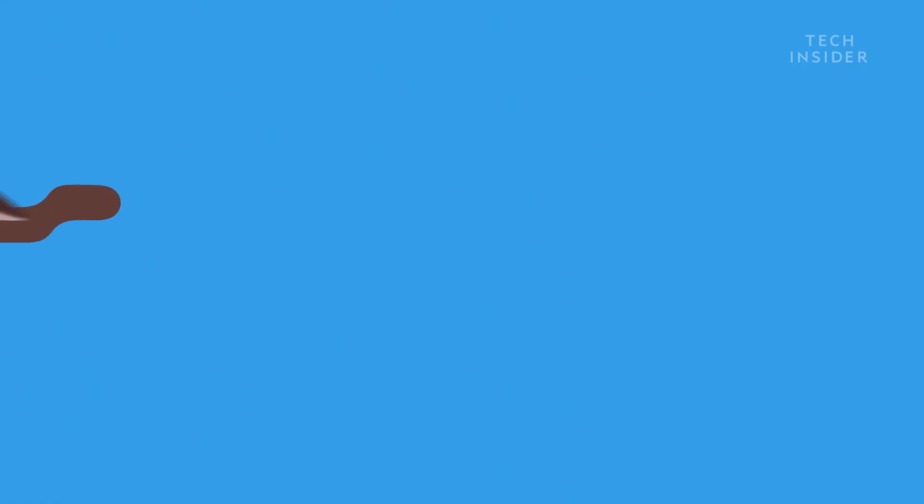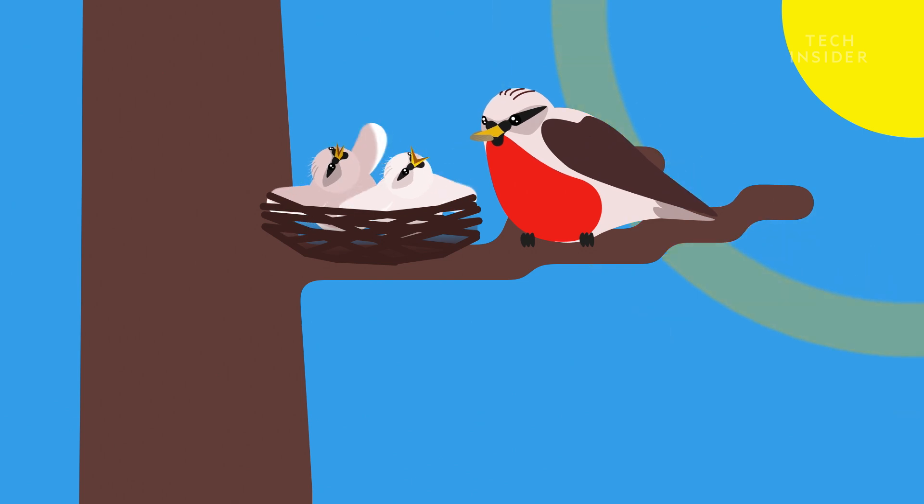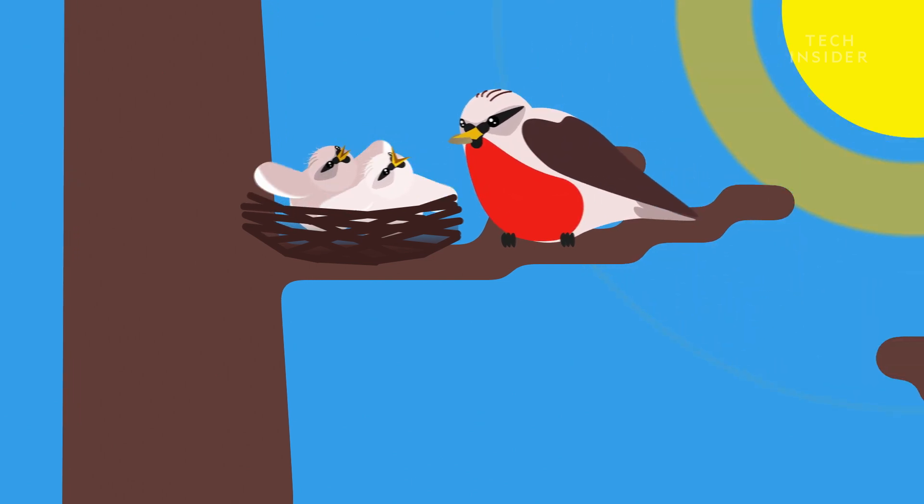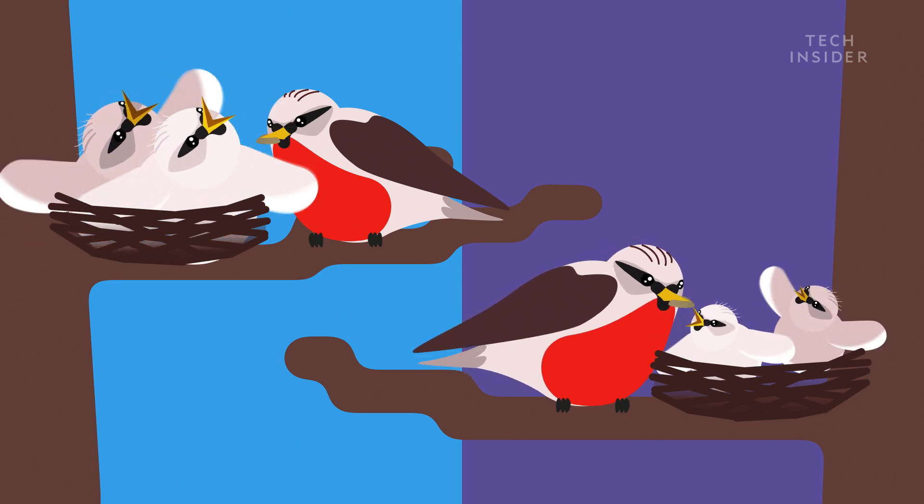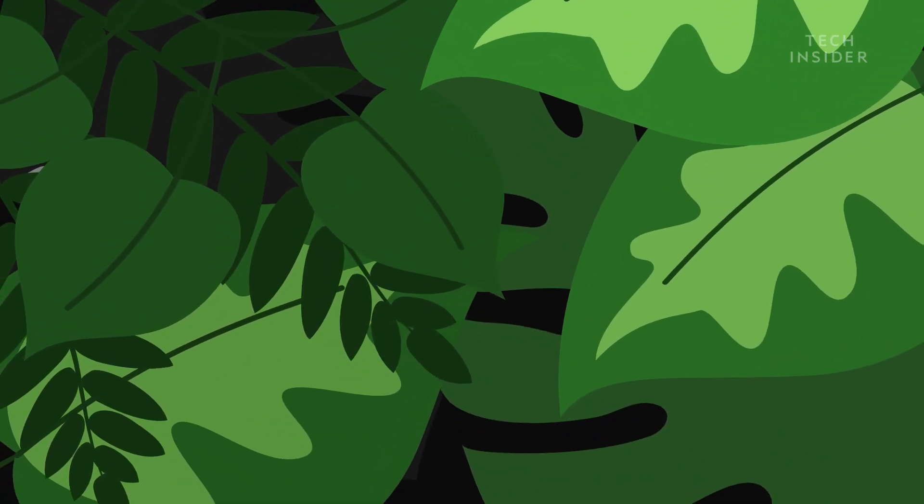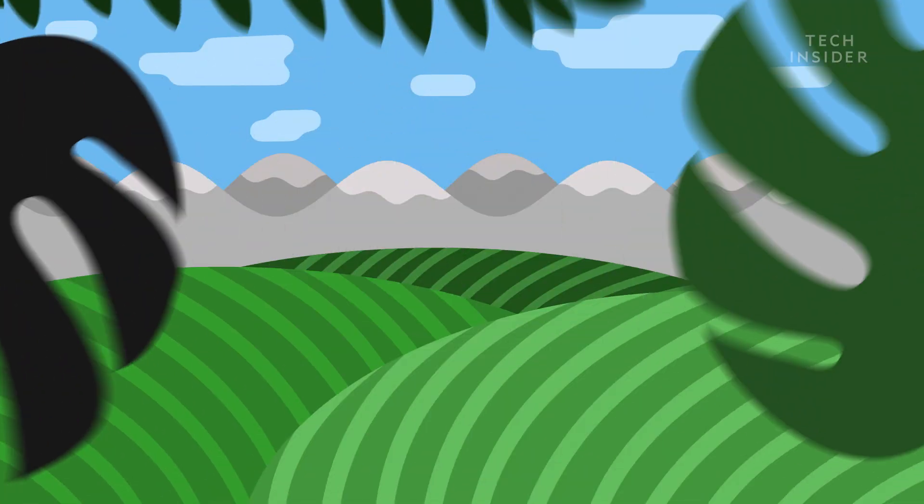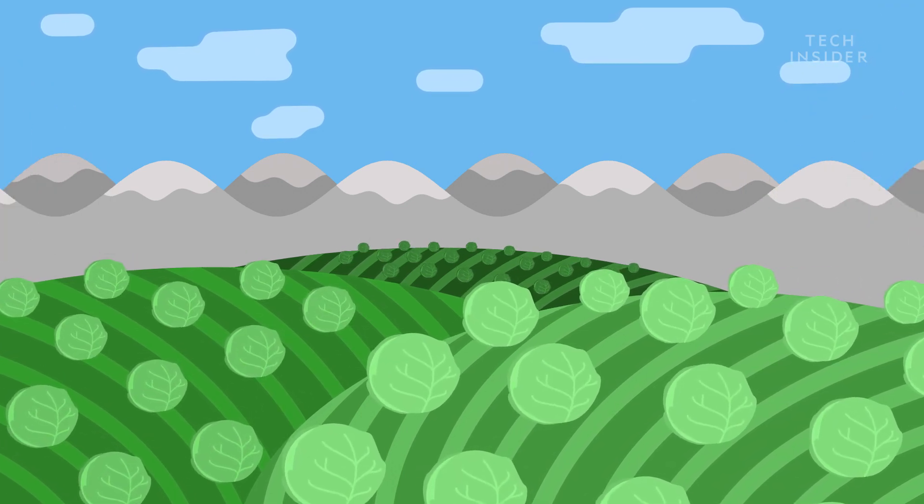At first, animals would take advantage of the extra light to find and eat more food. Just like Alaskan birds, which feed their chicks extra nutrition in the summer, resulting in faster-growing babies than their southern counterparts. And plant growth would explode, since they get their energy directly from sunlight. Farms in Northern Alaska, for example, grow cabbages the size of Rottweilers in the summer.